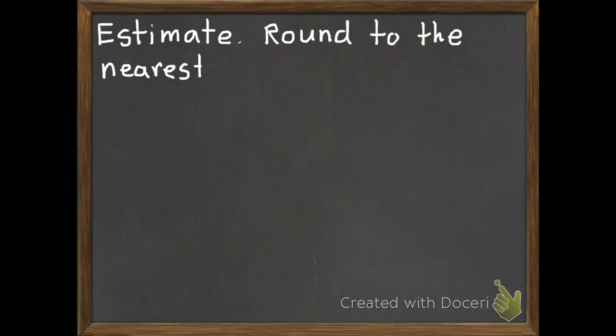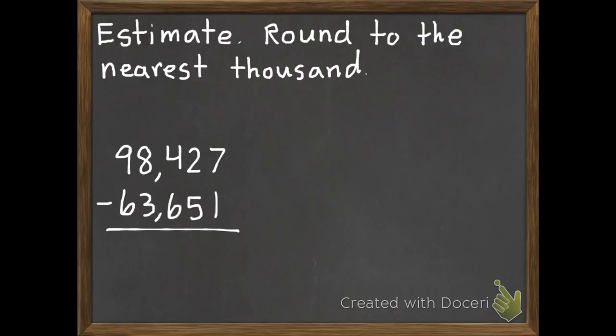My second example problem: estimate, round to the nearest thousand. Make sure you read the instructions carefully so you know where you're rounding to. So I'm going to decide if our thousands place will stay the same or if we'll go up one. So that 8 is going to stay the same, and this 3 is going to go up to a 4.